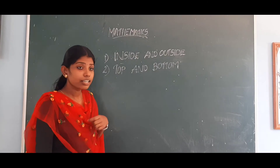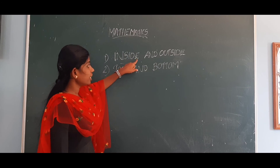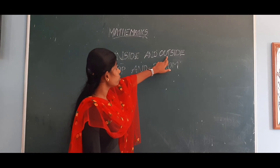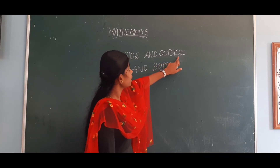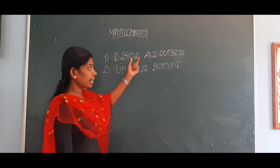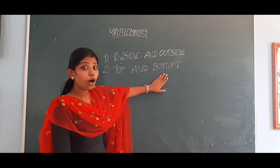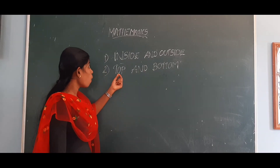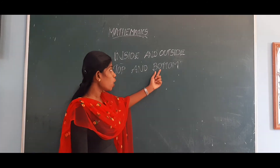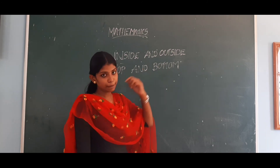How do you spell inside? I-N-S-I-D-E. How do you spell outside? O-U-T-S-I-D-E. And how do you spell top? T-O-P. How do you spell bottom? B-O-T-T-O-M.